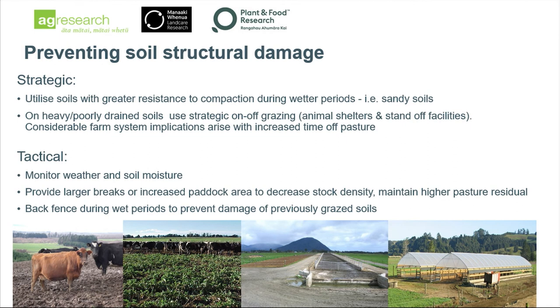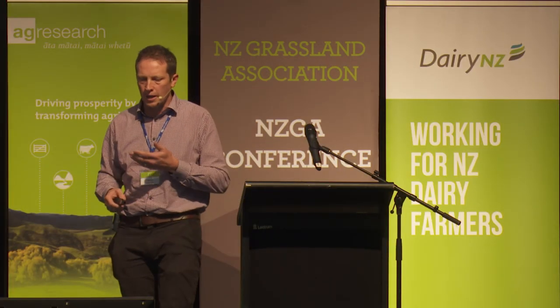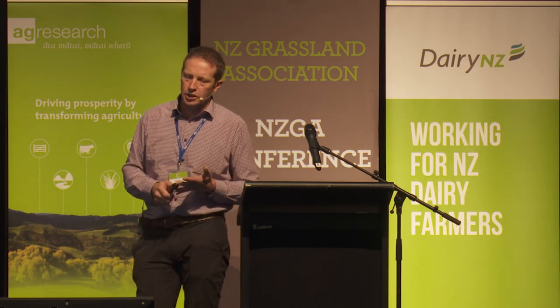Prevention is obviously better than repairing. There are tactical and strategic options. If you've got a range of soil types on your farm, the best approach is to use your well-drained soils — which are less resistant to damage — during higher-risk times. If you've only got heavily poorly-drained soil types, off-grazing systems, animal shelters, and standoff facilities are tools to help decrease risk and damage. But there are farm system implications: dung returns are totally different, you're increasing extra costs, and potentially changing pasture quality the more you use that system.